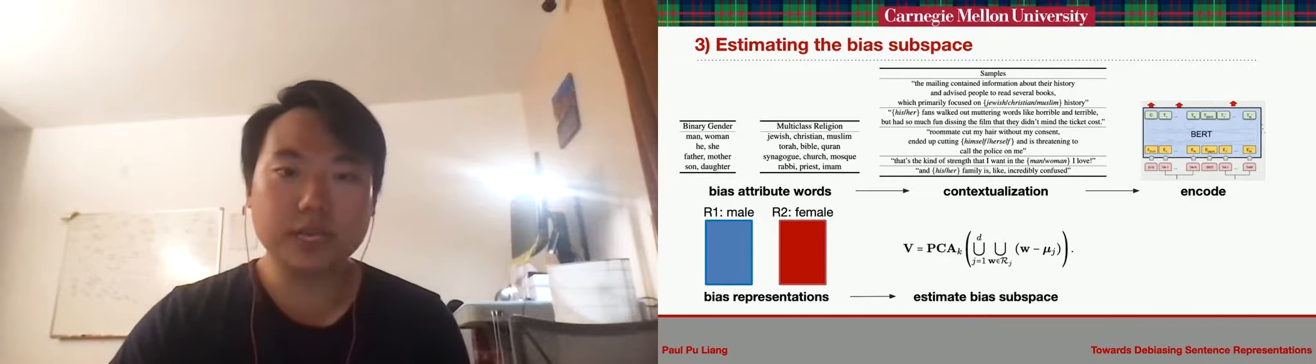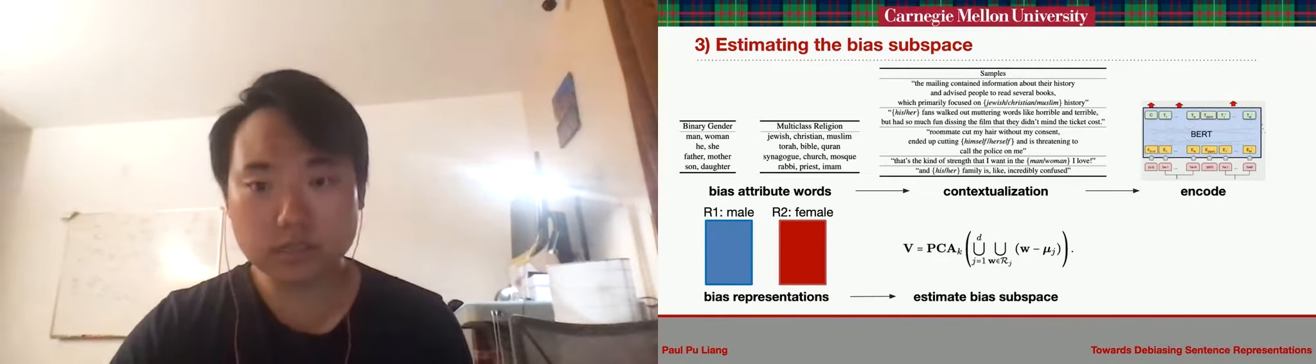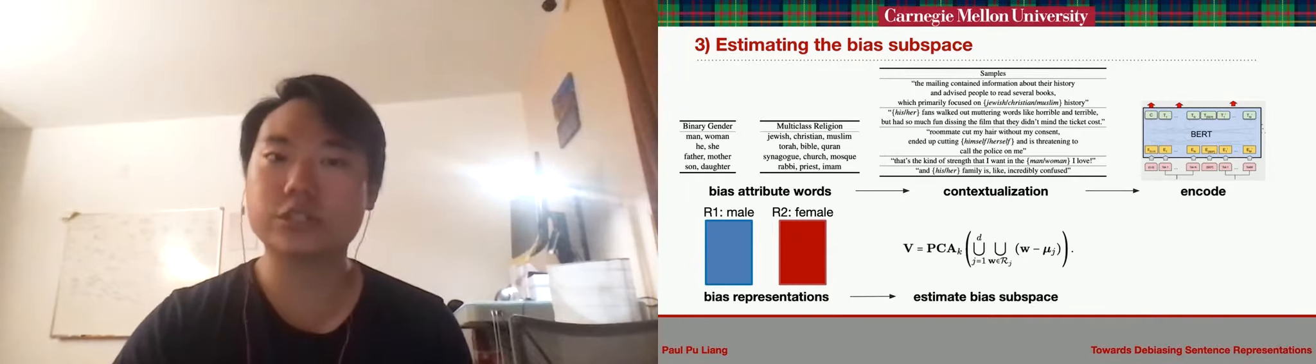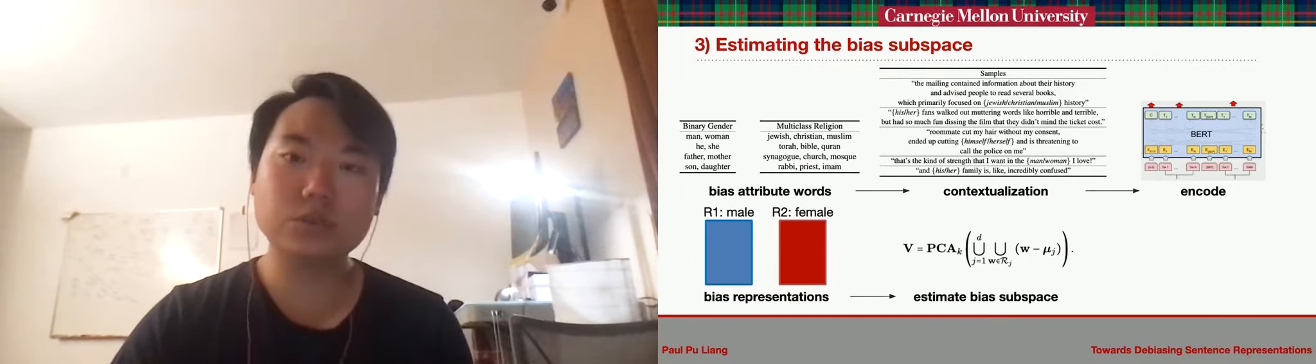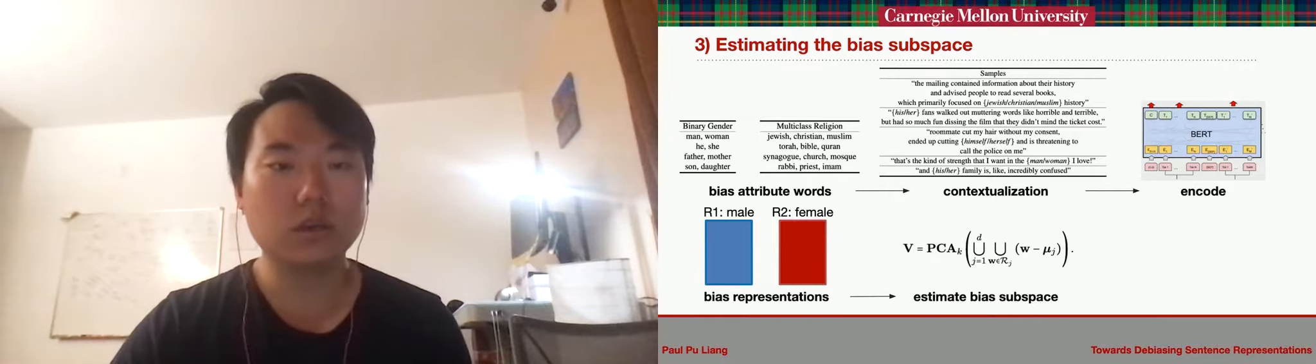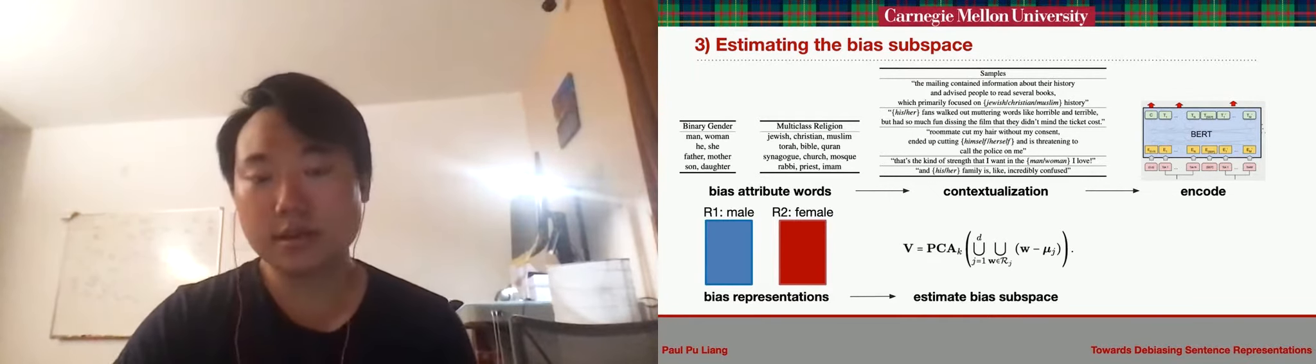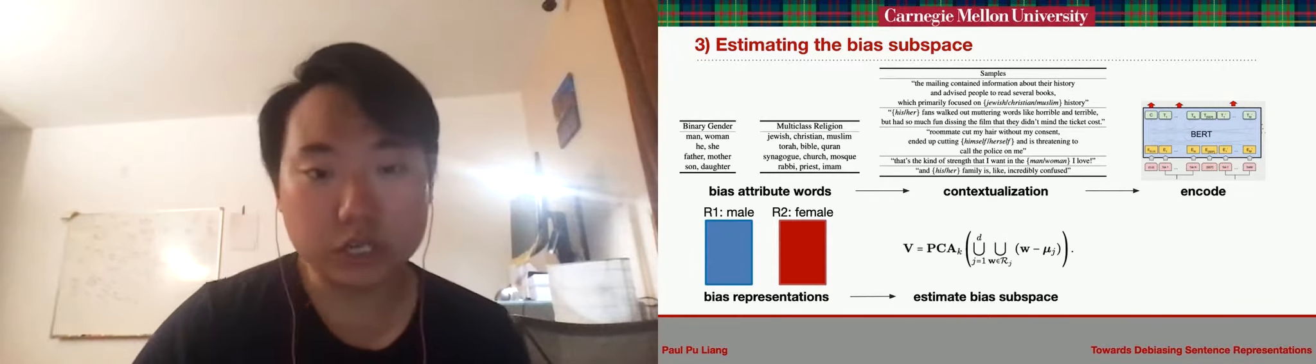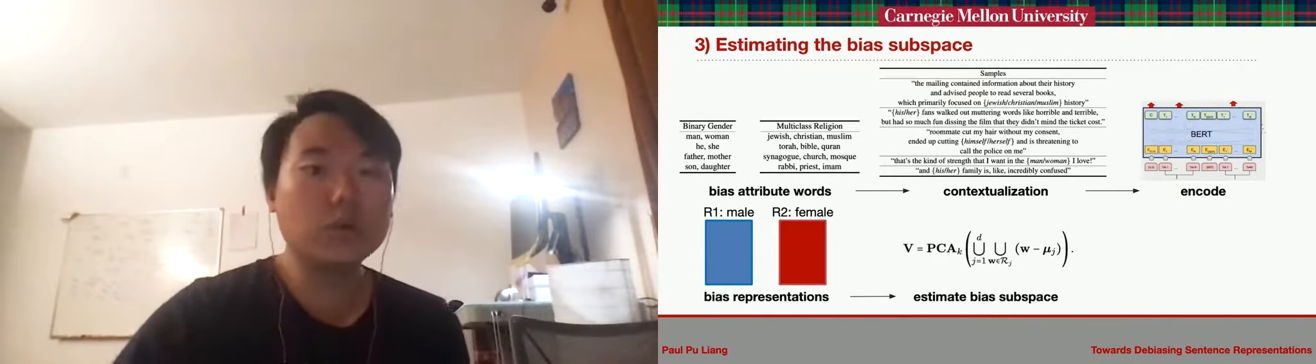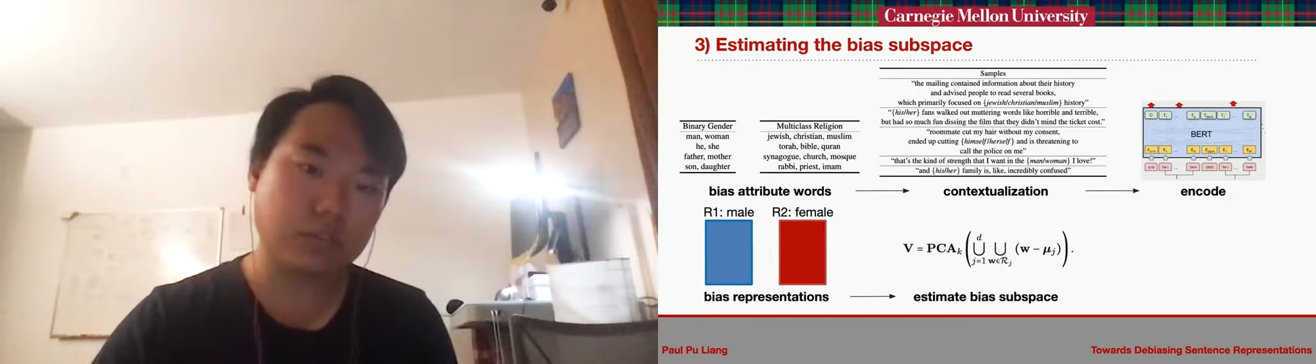Now that we have contextualized all biased words into sentences, we pass these sentences through a pre-trained sentence encoder, such as BERT, to obtain sentence representations. We collect a set of representations for each bias attribute. For example, when dealing with gender bias, R1 would define the space of sentence representations in the male context.